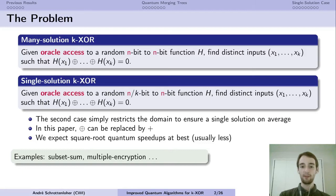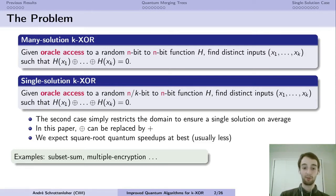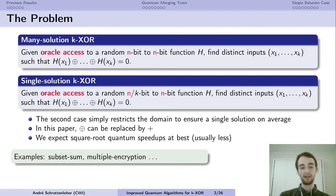We can assume that the function produces as many elements as we like — this is the many-solution case. Alternatively, we can assume that on average there is a single solution, in which case the domain is restricted to 2^(n/k) elements, and among them only a single k-tuple XORs to zero. XOR can be replaced by modular addition in all the algorithms presented in this paper.